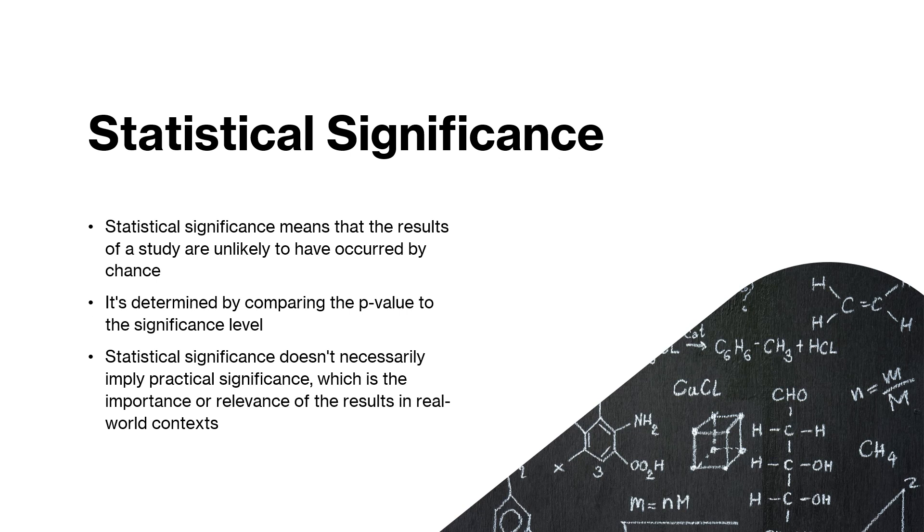Statistical significance means that the results of a study are unlikely to have occurred by chance. It's determined by comparing the p-value to the significance level. Statistical significance doesn't necessarily imply practical significance, which is the importance or relevance of the results in real-world context.